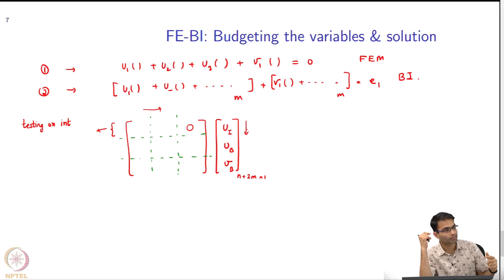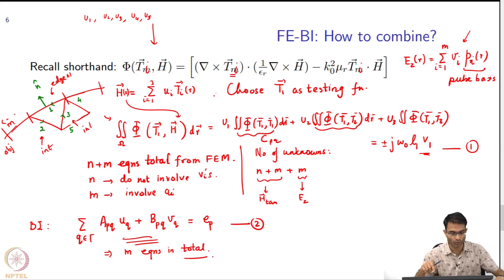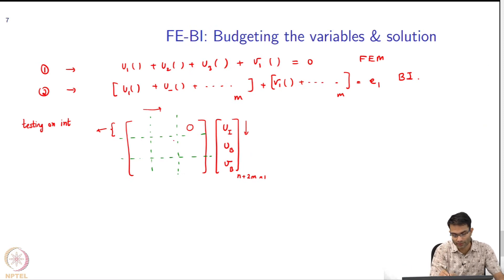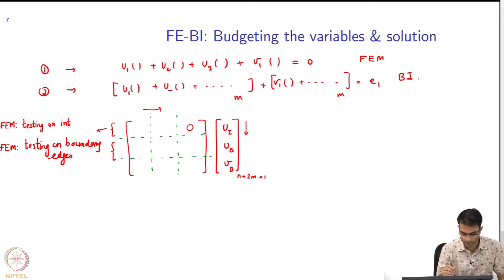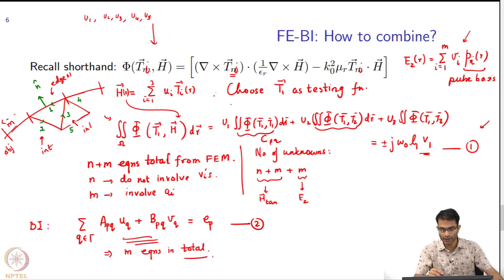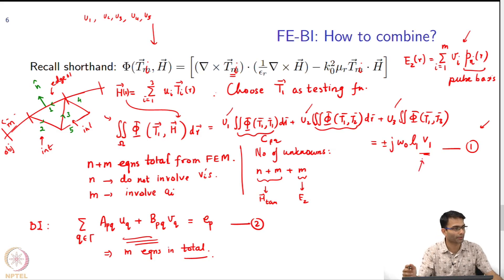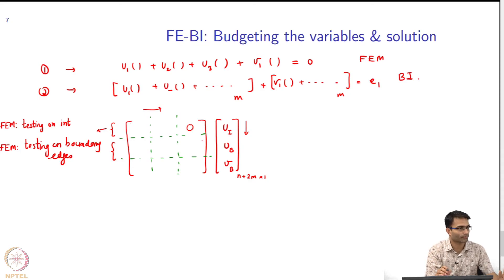Then I move to the FEM equations considering the boundary edges. That is the example we took — equation 1 involves the u's and the v's, so all of them are non-zero in general. This is FEM testing on boundary edges. It involves, as we have seen, u1, u2, u3 — u1 is on the boundary, u2 and u3 are on the interior — and it involves v1 which is on the boundary only. So all 3 blocks will be non-zero.